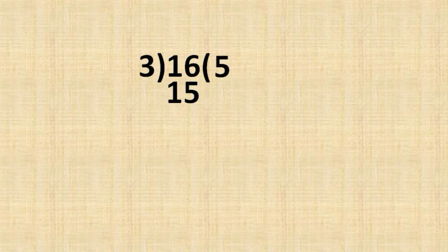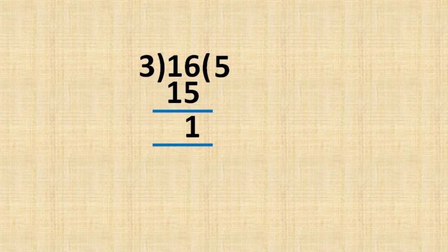16 divided by 3. We have 16 objects divided into three groups. So we choose from the 3 table: 3 times 5 is 15. So 3 times 5 equals 15, remainder is 1. This is simple division.